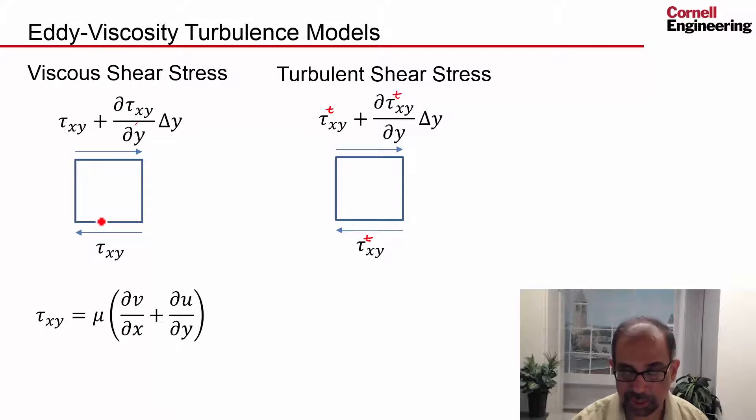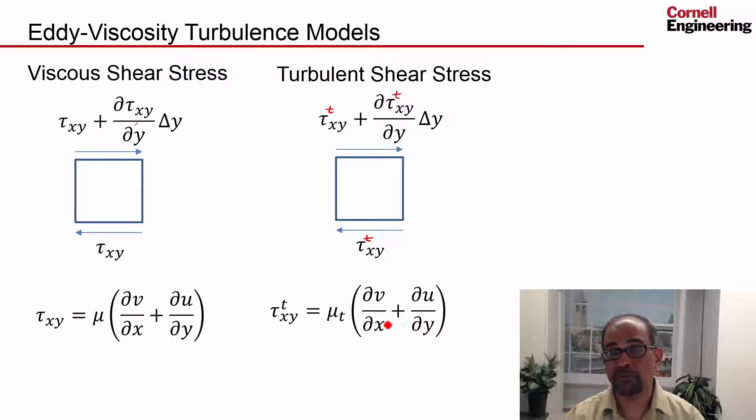Each term is analogous to a similar term for viscous forces. We are basically saying that the average effect of the fluctuations is to cause an additional shear. And analogous to this, in an eddy viscosity turbulence model, you write this in terms of the velocity gradients. This is called the eddy viscosity, and you can think of that as analogous to the molecular viscosity.